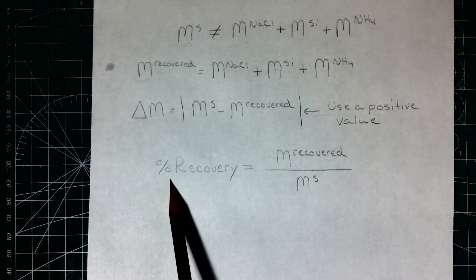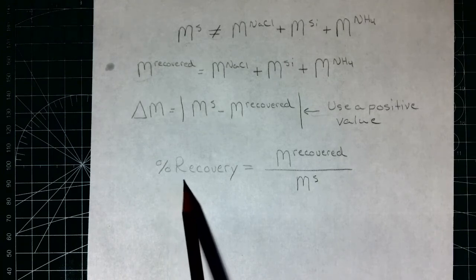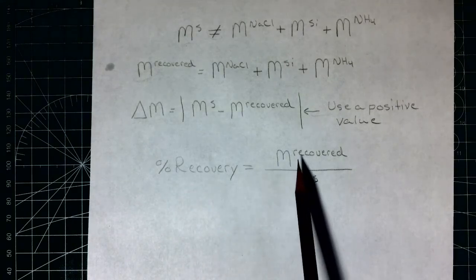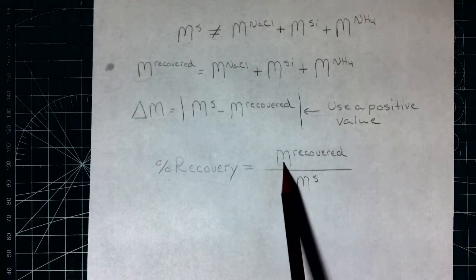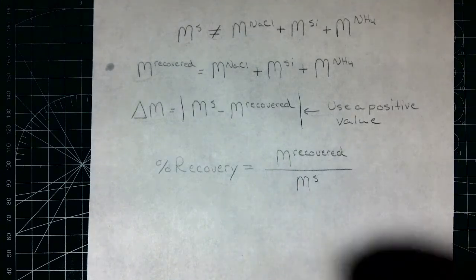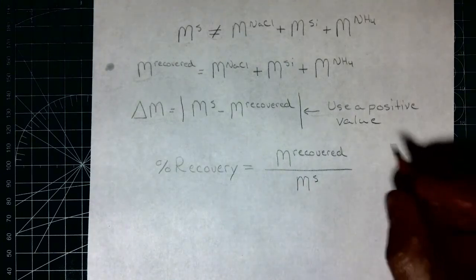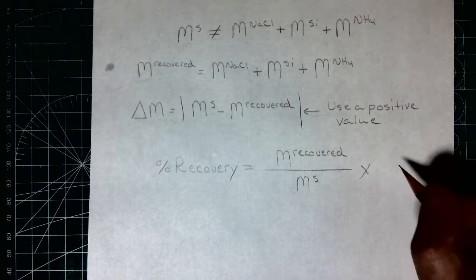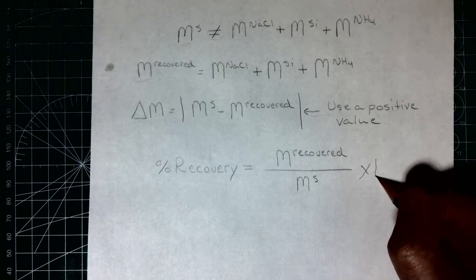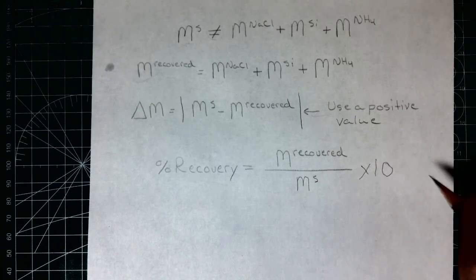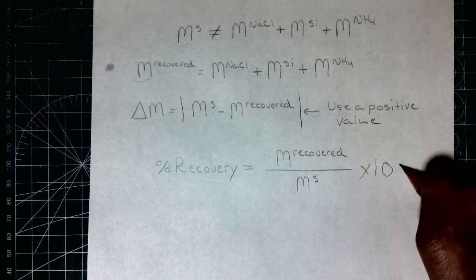Finally, we're going to calculate the percent recovery. That's the mass of what was recovered divided by the mass of the sample, multiplied by 100% to make sure we're getting a percentage.